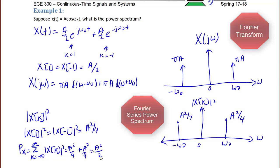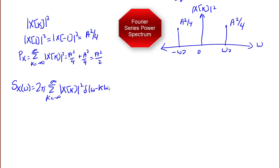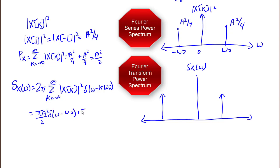Next, we find the Fourier transform power spectrum S_x(ω) = 2π times the summation from k = −∞ to ∞ of |x[k]|² δ(ω − kω₀). The plot shows two impulses at ±ω₀. Their values are found from the prior plot by multiplying by 2π, giving S_x(ω) = (πA²/2) δ(ω − ω₀) + (πA²/2) δ(ω + ω₀). The area under each impulse is πA²/2.